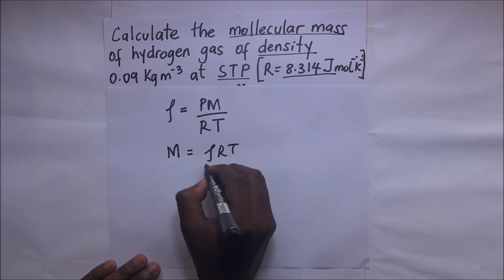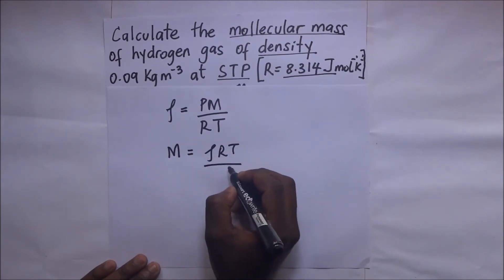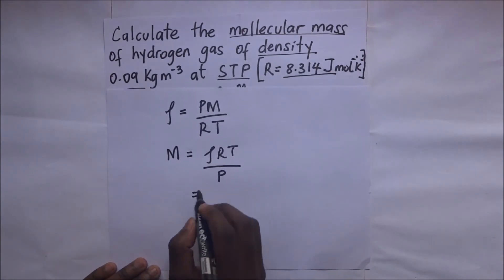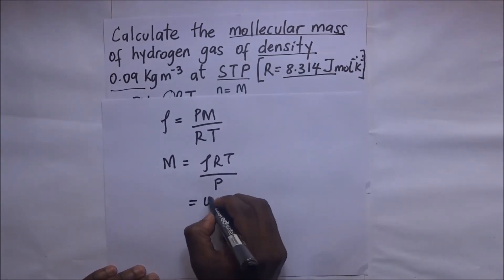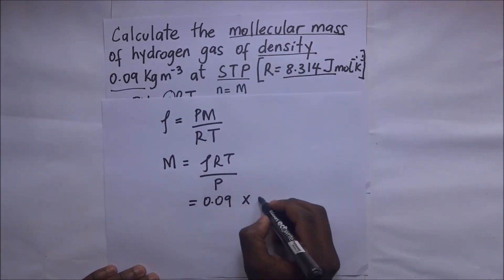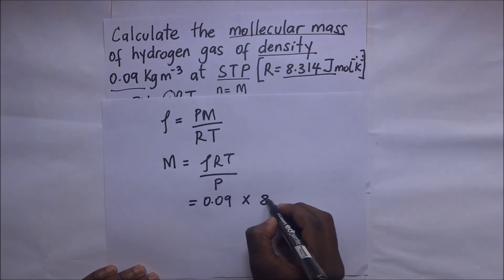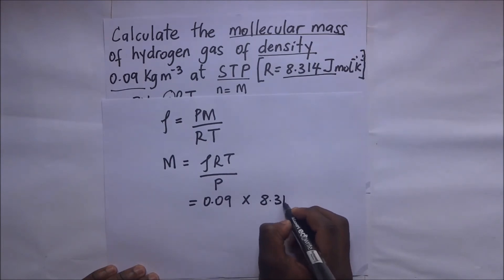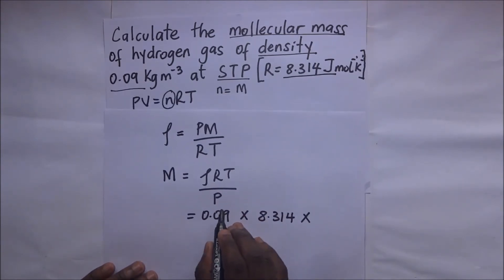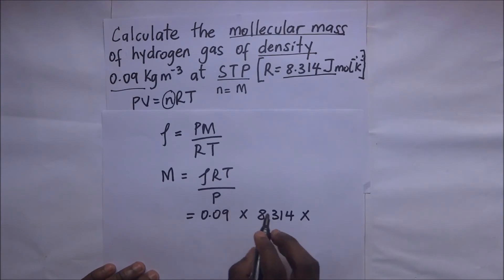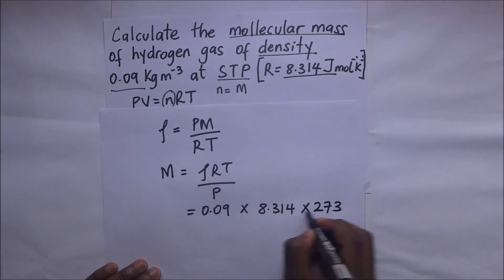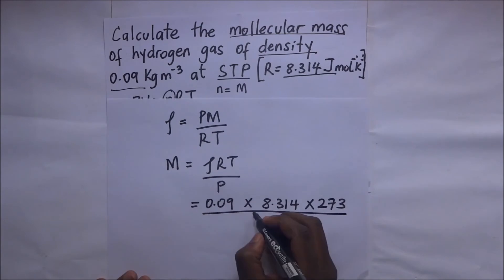So the molecular mass M = ρRT / P. Substituting: density ρ = 0.09, R = 8.314, absolute temperature T = 273 K, divided by the pressure P, we calculate the molecular mass of hydrogen gas.